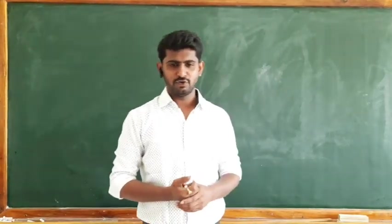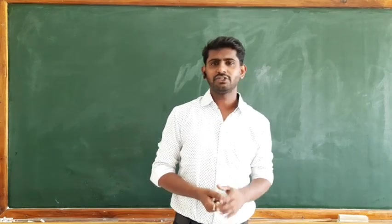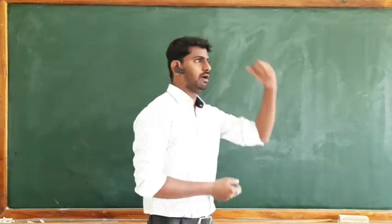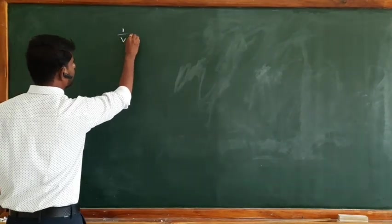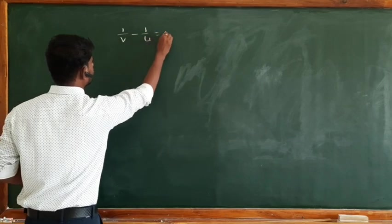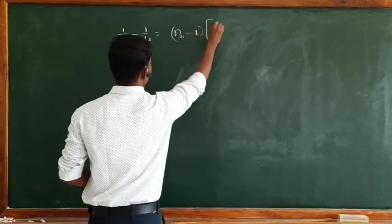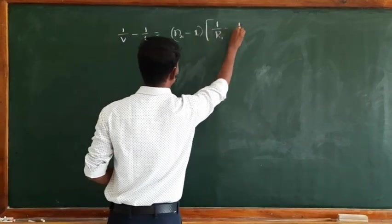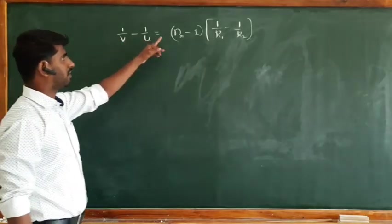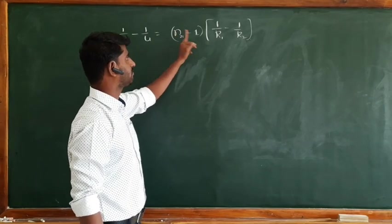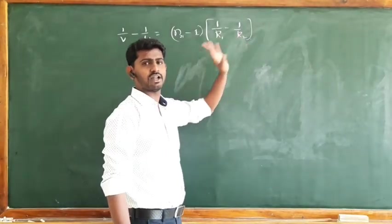In our last class we were discussing the Lens Maker's formula. During that derivation, we arrived at the equation: 1/v minus 1/u is equal to the refractive index of the secondary medium with respect to the first, minus 1, into (1/R1 minus 1/R2).